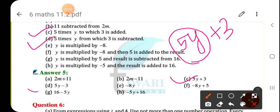Next, 5 times y from which 3 is subtracted. So here you have to do minus sign, so 5y minus 3. Y is multiplied by minus 8. So it is minus 8 into y. Y is multiplied by minus 8 and then 5 is added to the result. So it is minus 8y plus 5.